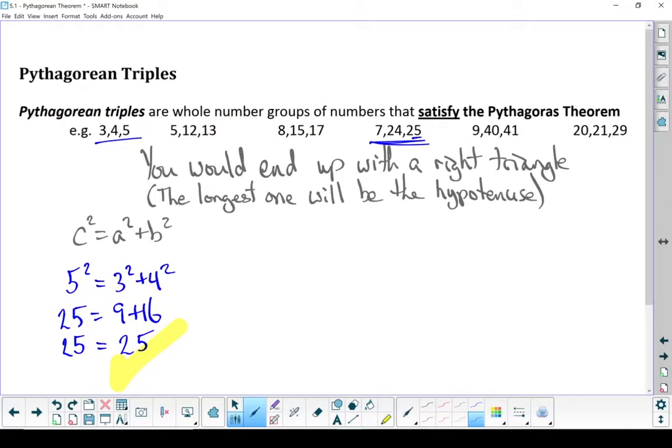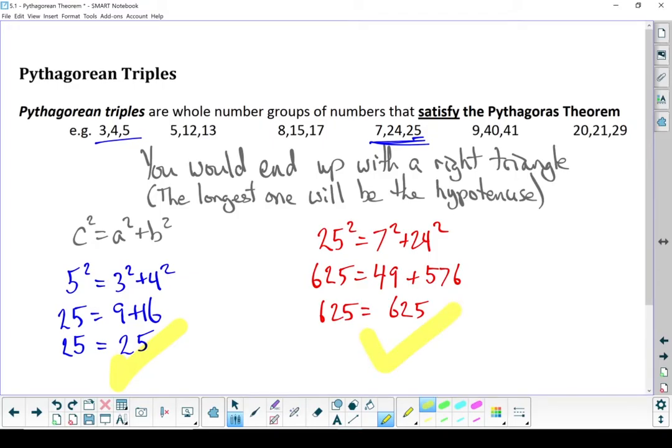Let's try that one right there. 25 being my biggest number, so that's my c squared. A Pythagorean Triple.